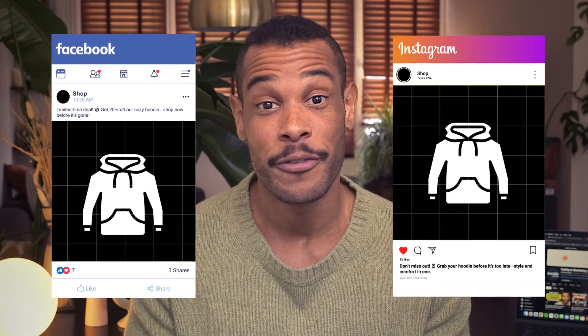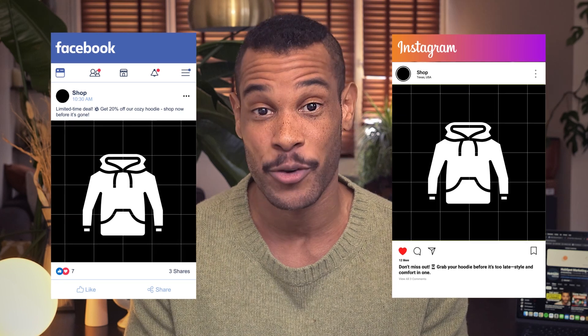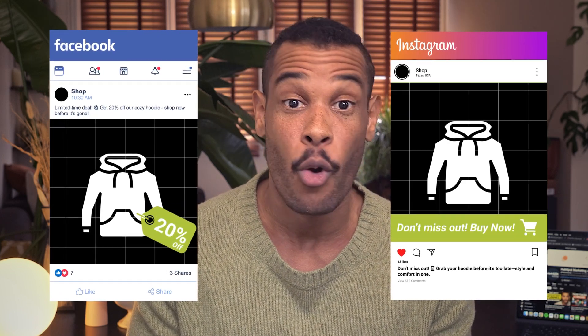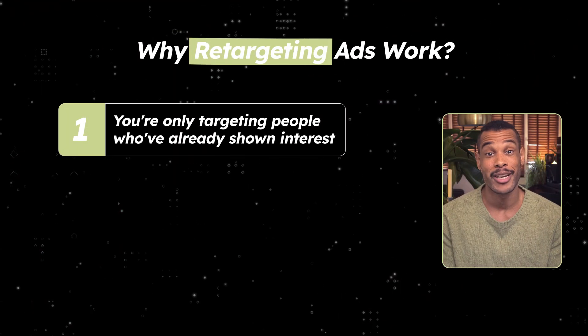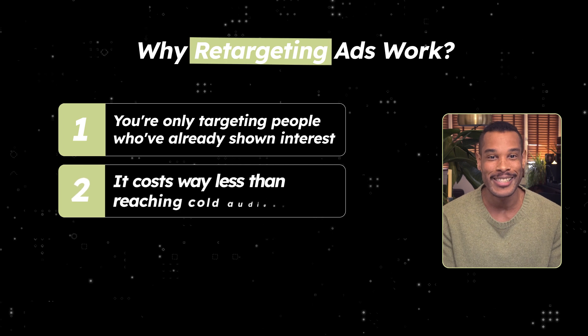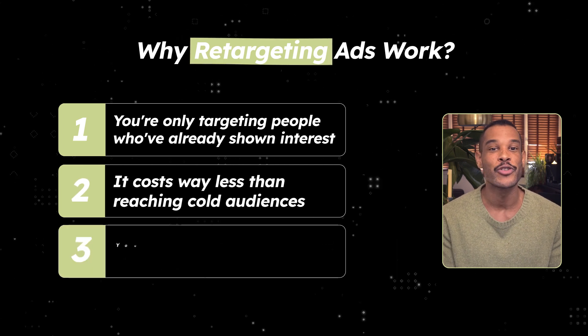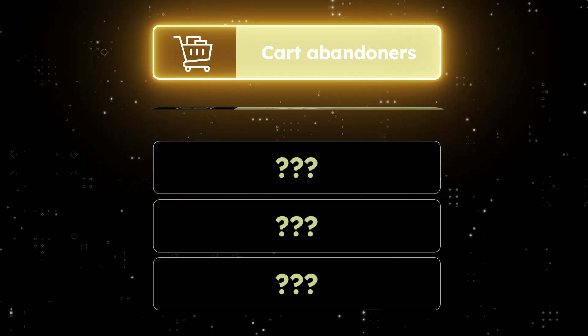But smart brands will show that exact hoodie to them later on Facebook and Instagram, maybe with a special offer or reminder. When that person is finally ready to buy, boom — you're right there in their feed. Why does this work so well? Simple. You're only targeting people who have already shown interest, and it costs way less than reaching cold audiences.